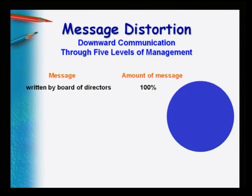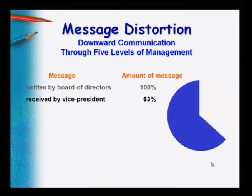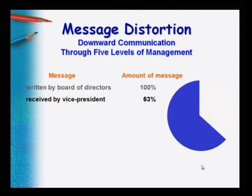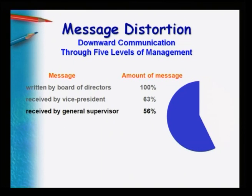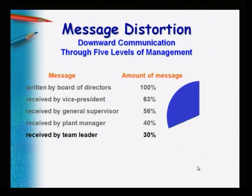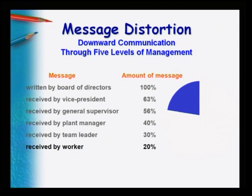An interesting example of message distortion shows how miscommunication happens in downward communication across five levels of management. A message written by the board of directors is 100 percent. When received by the vice president it becomes 63 percent. When received by the general supervisor it becomes 56 percent. When received by the plant manager it becomes 40 percent. And when finally received by the worker, only 20 percent remains. This is deplorable — from top to bottom, a 100 percent message slowly deteriorated and distorted so that only 20 percent was actually received.